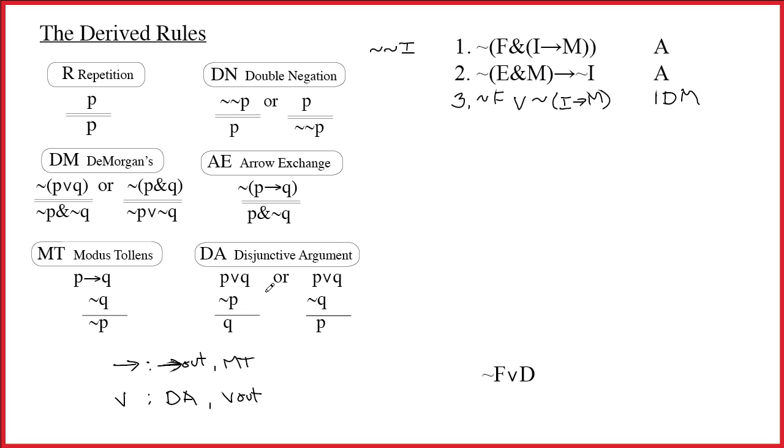For disjunctive argument, it's a great intuitive rule. P or Q, at least one of those has to be true. If it's not P, it's Q. If it's not Q, it's P. So I look at this rule, I look at this line, and knowing this rule, I know what I have to go look for. I have to either find tilde tilde f, that's the P part plus one tilde, or I have to find tilde tilde i arrow m. And I look for both of them and I say, I obviously don't have either one of those. So unfortunately I cannot do disjunctive argument right now.